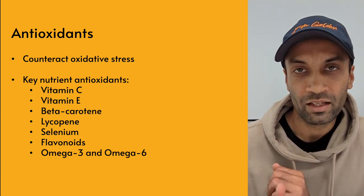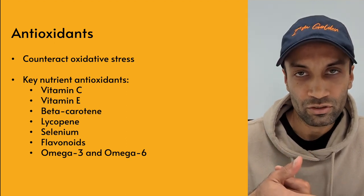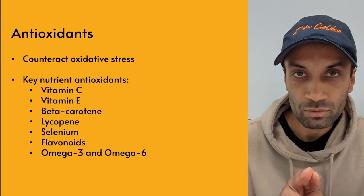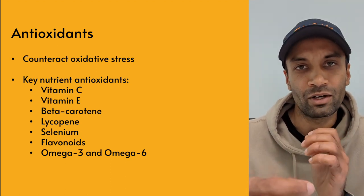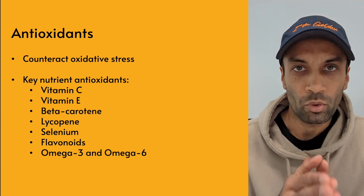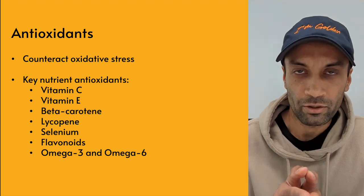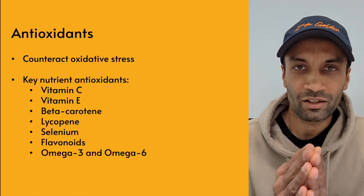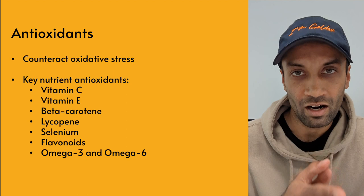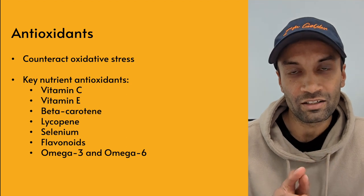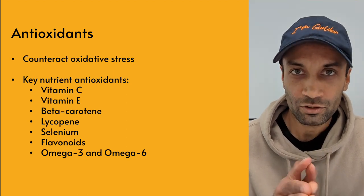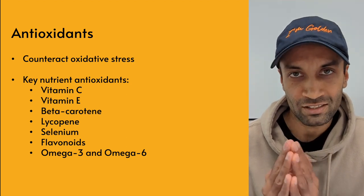Beta-carotene: leafy green vegetables, orange and yellow vegetables, cantaloupe, mango, and red bell pepper. Lycopene: guava, tomato, watermelon, grapefruit, red bell pepper, papaya. Selenium: garlic, onions, grains, nuts, soybean, and seafood.